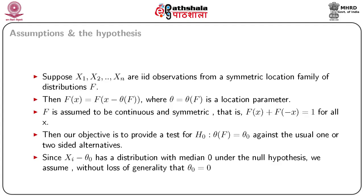For the development of the Wilcoxon signed rank test we need to define a few basic things. Suppose x1, x2, ..., xn are iid observations from a symmetric location family of distributions f. Then f(x) equals f(x minus theta) where theta is the location parameter. It is also assumed that f is continuous and symmetric.